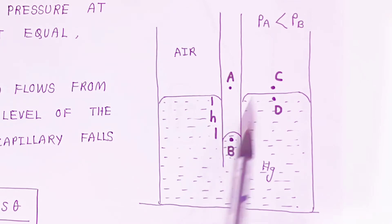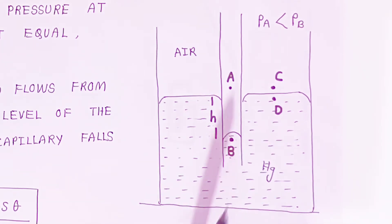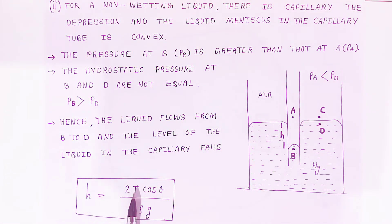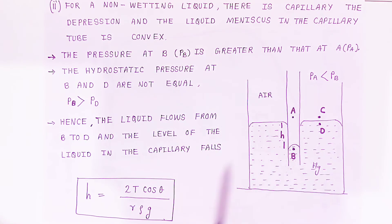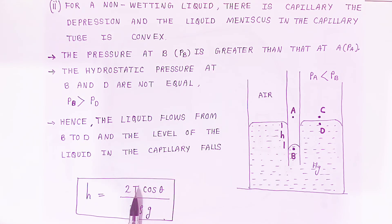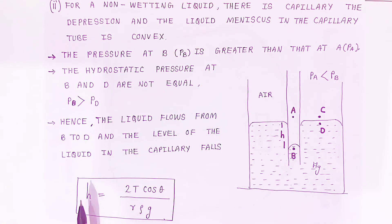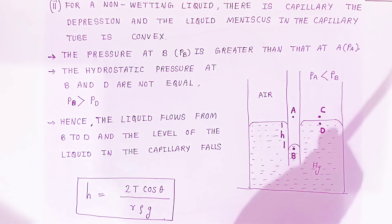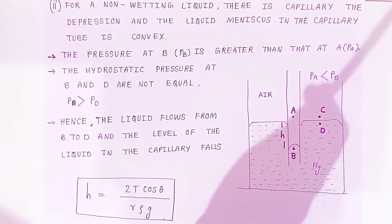For capillary depression, the formula for height of fall is: h = 2T cosθ / (r ρ g), where r is the radius of the capillary, ρ is the density of mercury, and g is gravity. If you know the surface tension T and the angle of contact θ, you can calculate how much the liquid falls quantitatively.